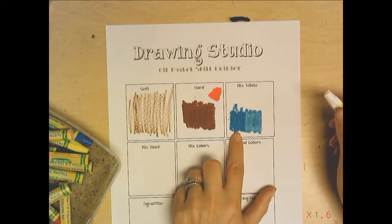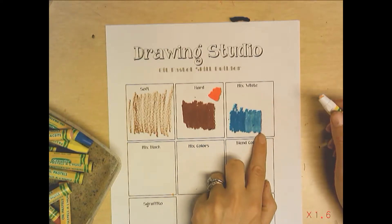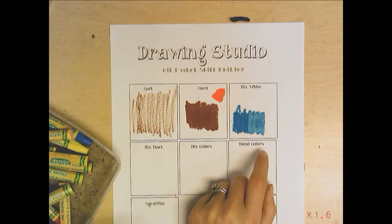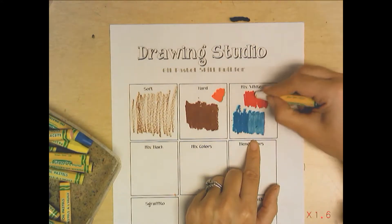You should be able to tell the difference here from just regular blue and blue mixed with white. This is a little lighter and it's a little creamier, a little softer. You can try that with more than one color to kind of see what you get, do a little experiment in your little box.